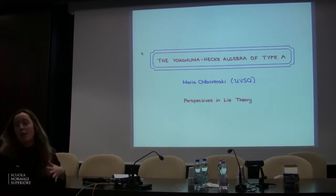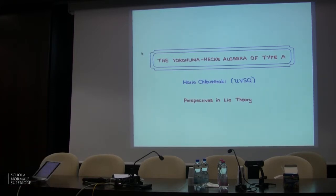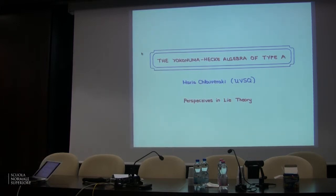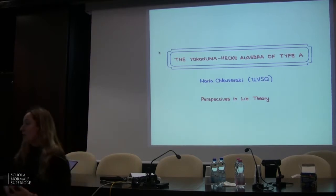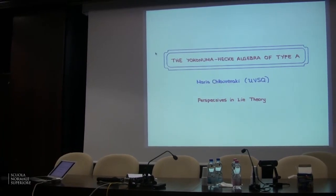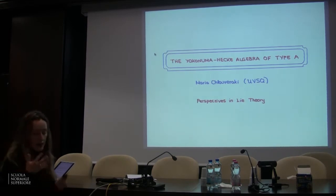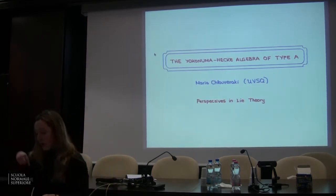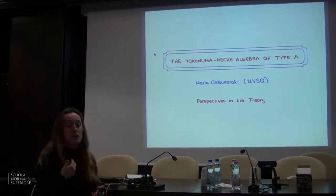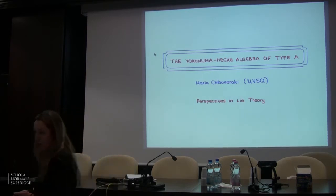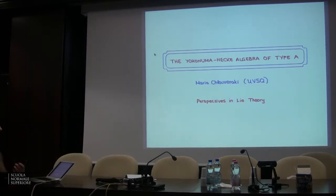I'm going to talk to you about the Yokonuma-Hecke Algebra Type A, which falls under the title of this workshop because Yokonuma-Hecke Algebras were introduced by Yokonuma as generalizations of Iwahori-Hecke Algebras. An Iwahori-Hecke Algebra can be seen as an endomorphism ring in the context of Chevalley groups — finite Chevalley groups — as endomorphism rings of the permutation representation with respect to a Borel subgroup. What Yokonuma did was replace the Borel subgroup by any maximal unipotent subgroup, obtaining a generalized Iwahori-Hecke Algebra that we call Yokonuma-Hecke Algebra.